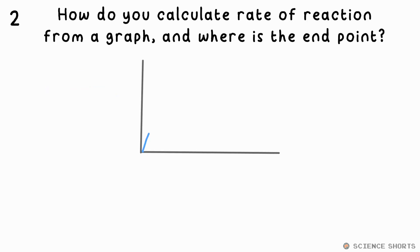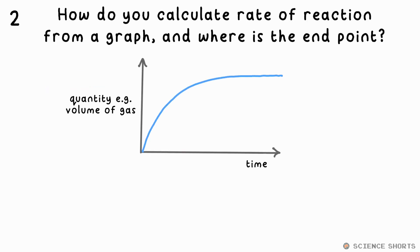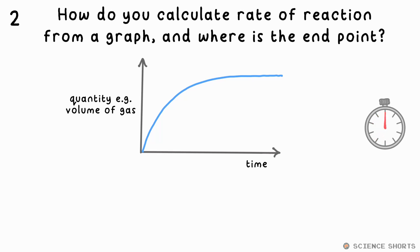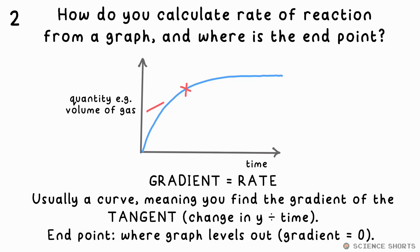How do you calculate rate of reaction from a graph, and how can you find the time taken for the reaction to complete? The gradient of the graph gives you the rate. As this line is usually a curve, you might have to draw a tangent at a certain time and find its gradient to get the rate. It's calculated by change in y divided by change in x — remember that any rate is change in something divided by time, some things per second, so it's whatever's on the y-axis divided by time.